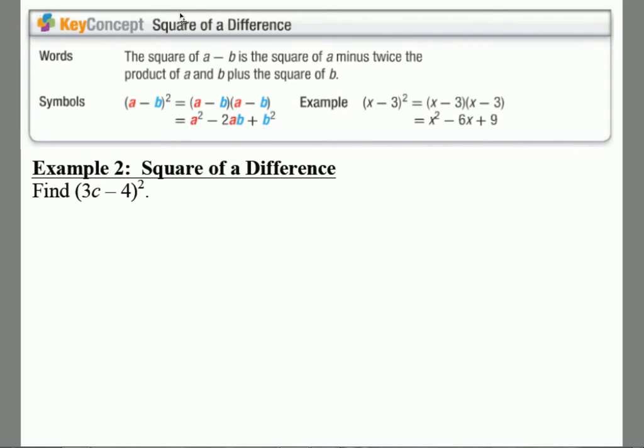Some of you may or may not know that there's also a square of a difference. So the only thing that is different when you have a minus sign instead of an (a + b) quantity squared is your answer is going to have a negative sign before your second term.